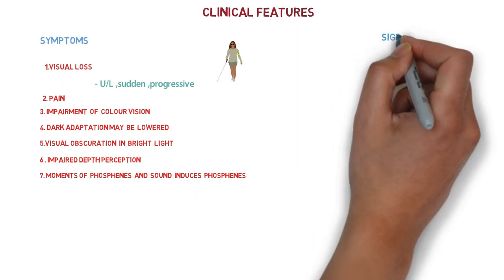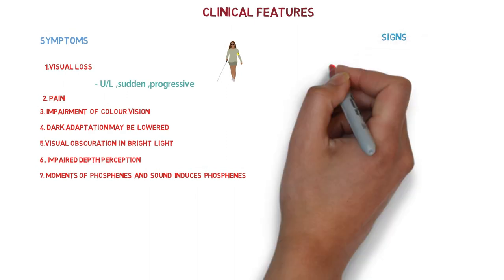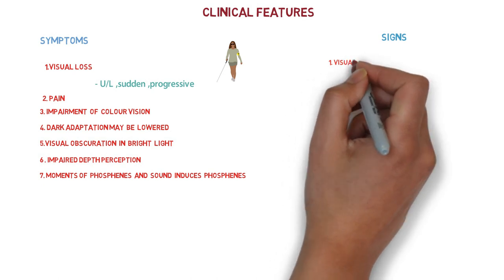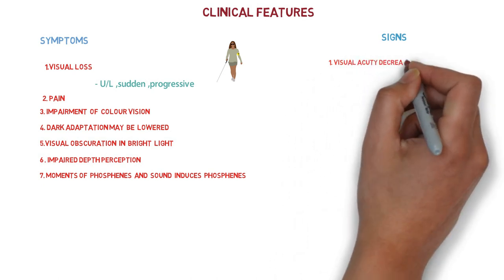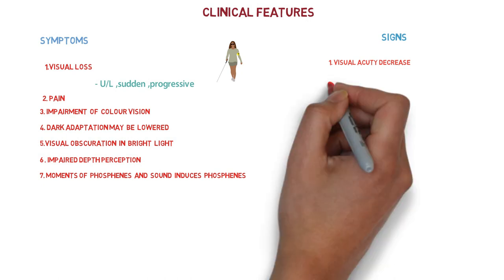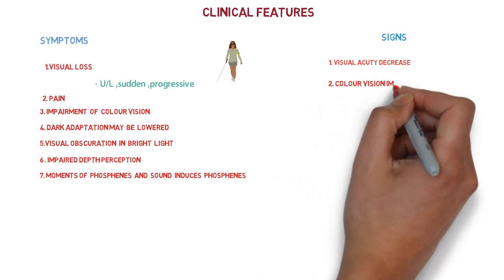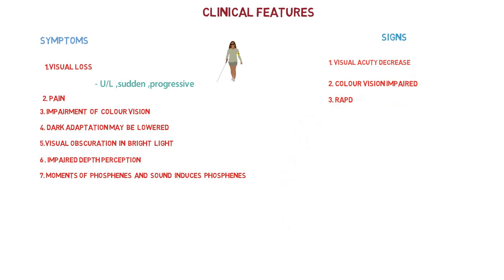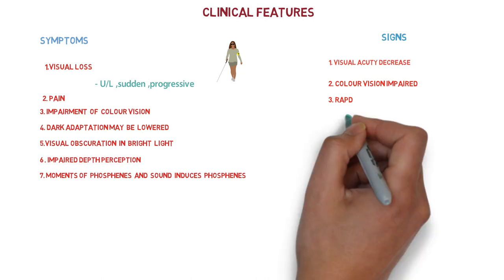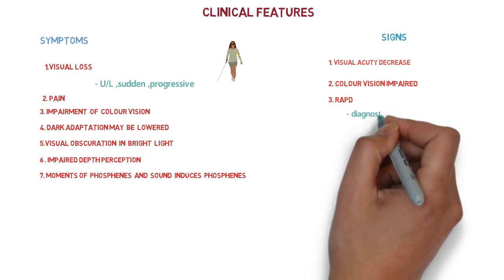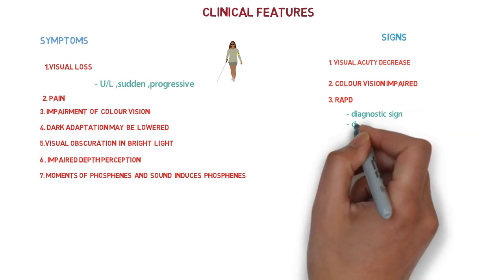We are going to look at signs of optic neuritis. First sign is that visual acuity is decreased. Then color vision is impaired. The pupil shows ill-sustained constriction to light - that is Marcus Gunn pupil - which indicates relative afferent pupillary defect (RAPD), and this RAPD is a diagnostic sign in optic neuritis which is detected by swinging flashlight test.